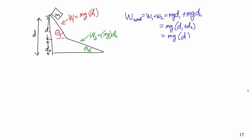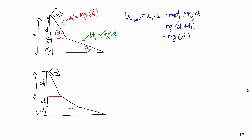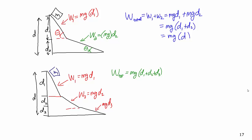And again, this could be extended to a ramp with three pieces, where the work done over the first piece is mgd1, the work done over the second piece is mgd2, and the work done over the third piece is mgd3. So the total work done is mg times d1 plus d2 plus d3, which is still mg times the vertical distance d.